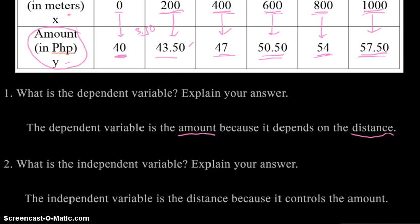In number 2 question, what is the independent variable? Ang independent variable natin dito is yung distance, because it controls the amount. Habang humahaba yung distance mo, yung amount mo ay lumalaki rin. So nakadepende yung amount dun sa distance.